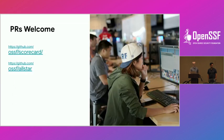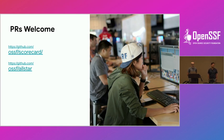When you're running Scorecard against a local repository, does it still need a GitHub token? No, it does not. When running locally, Scorecard does all the checks locally and does not need any GitHub token at all.